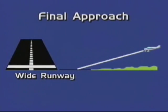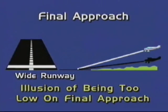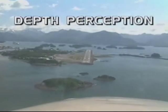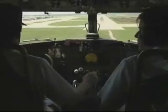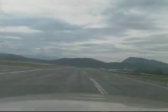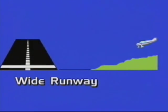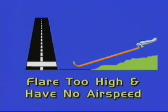An approach to an unusually wide runway may produce the illusion of being low on final approach. If believed, you may respond by pitching the aircraft nose up to increase glide path, which may result in a low-altitude stall or a missed approach. Depth perception can also be a problem due to runway width and length. If you have been landing on a narrow runway and then shoot an approach to a wide runway, your peripheral vision cues may not properly determine the height above the runway during the final approach and flare, and the possibility will exist for a hard landing. Conversely, if your experience is landing on a wide runway and you shoot an approach to a narrow runway, the possibility exists for you to flare too high and have no airspeed.